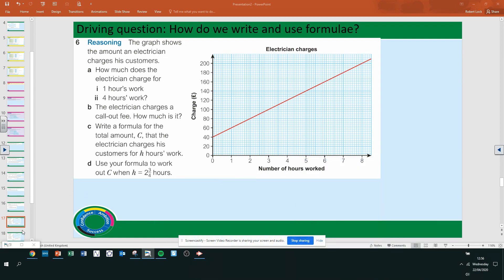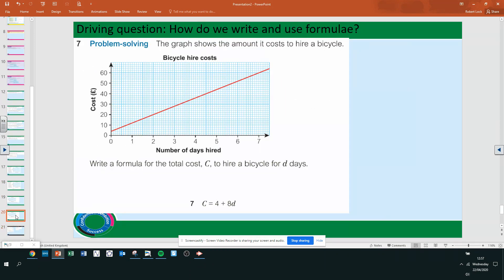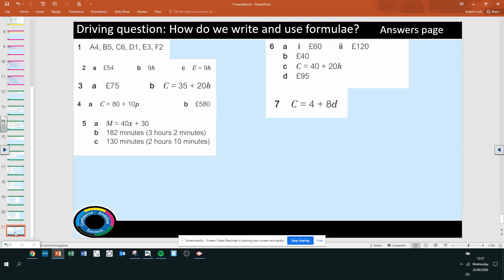And our last question. The graph shows the amount it costs to hire a bike. Write a formula for the total cost c to hire a bike for d days. So c equals 4 plus 8d. Okay, turn our new questions out.